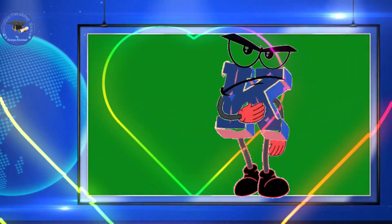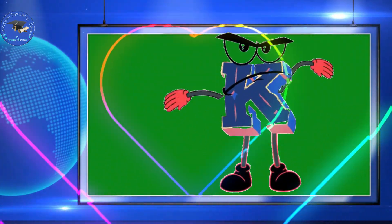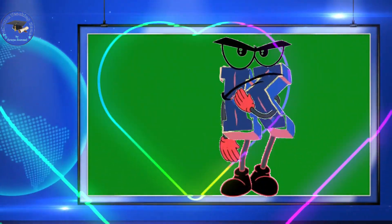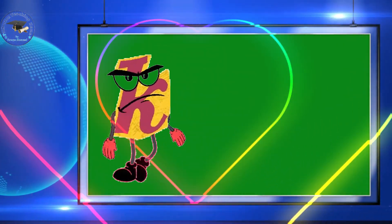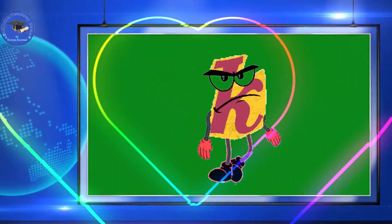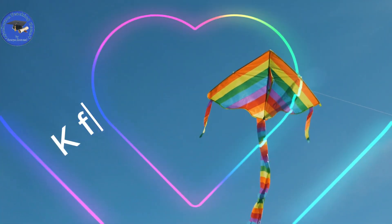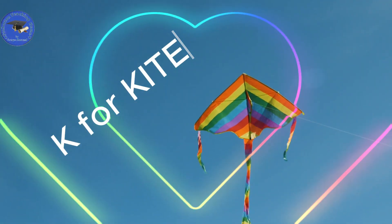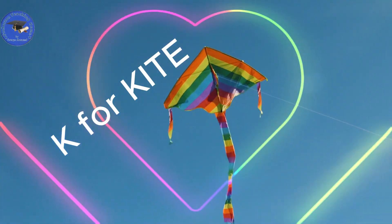Hi kids! I'm the letter K — capital K and small k. You spell my name K. K for kite — K-I-T-E. Kite.